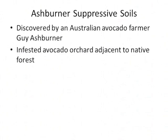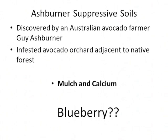The Ashburner suppressive soils have been sort of a case study looked at by many researchers, and the underlying conclusion people have come up with is that it's mulch and calcium. I wanted to look at whether we can apply the Ashburner system to blueberry production.